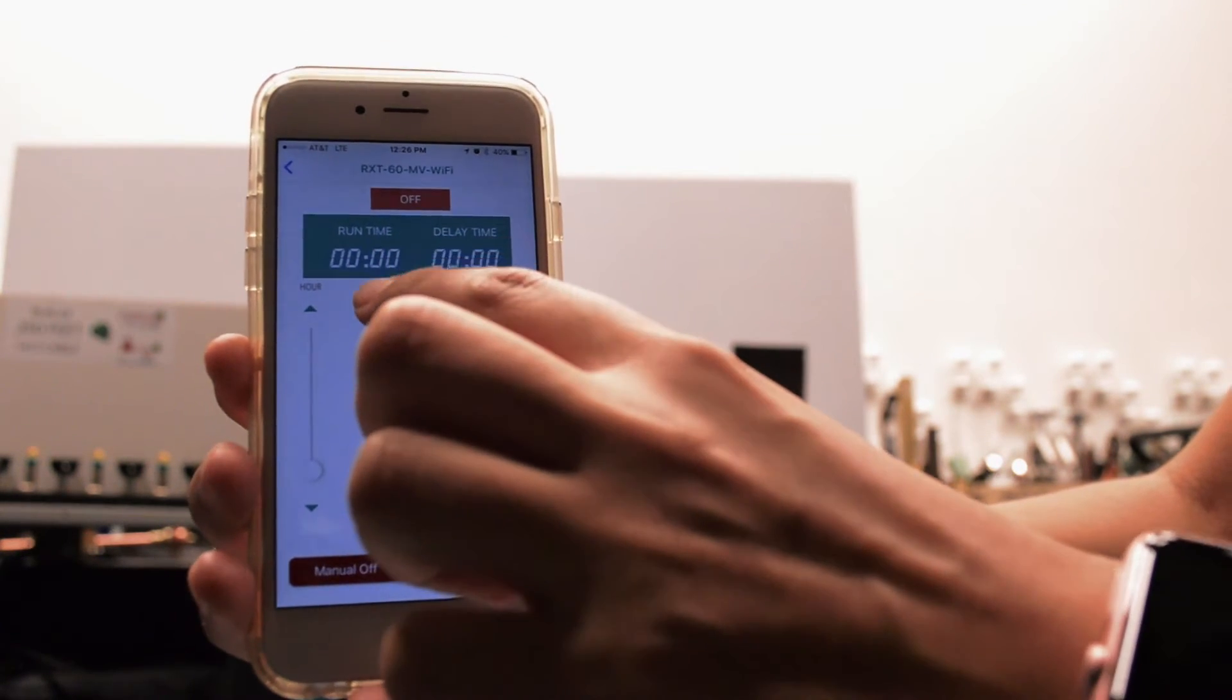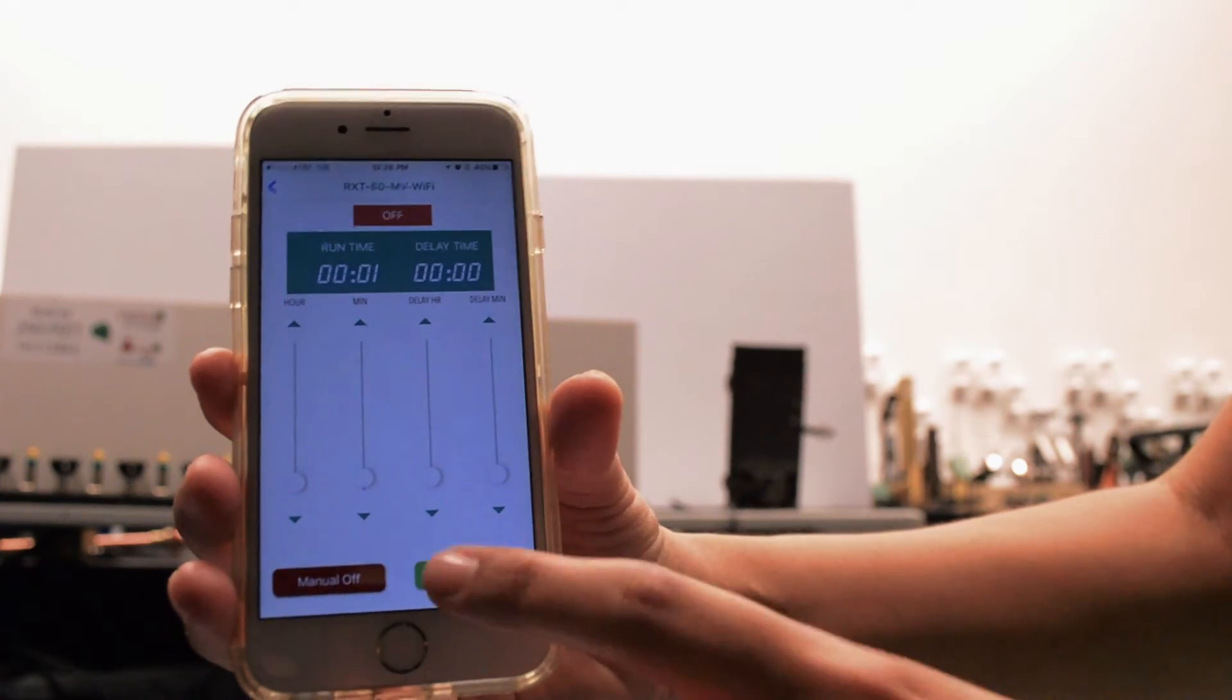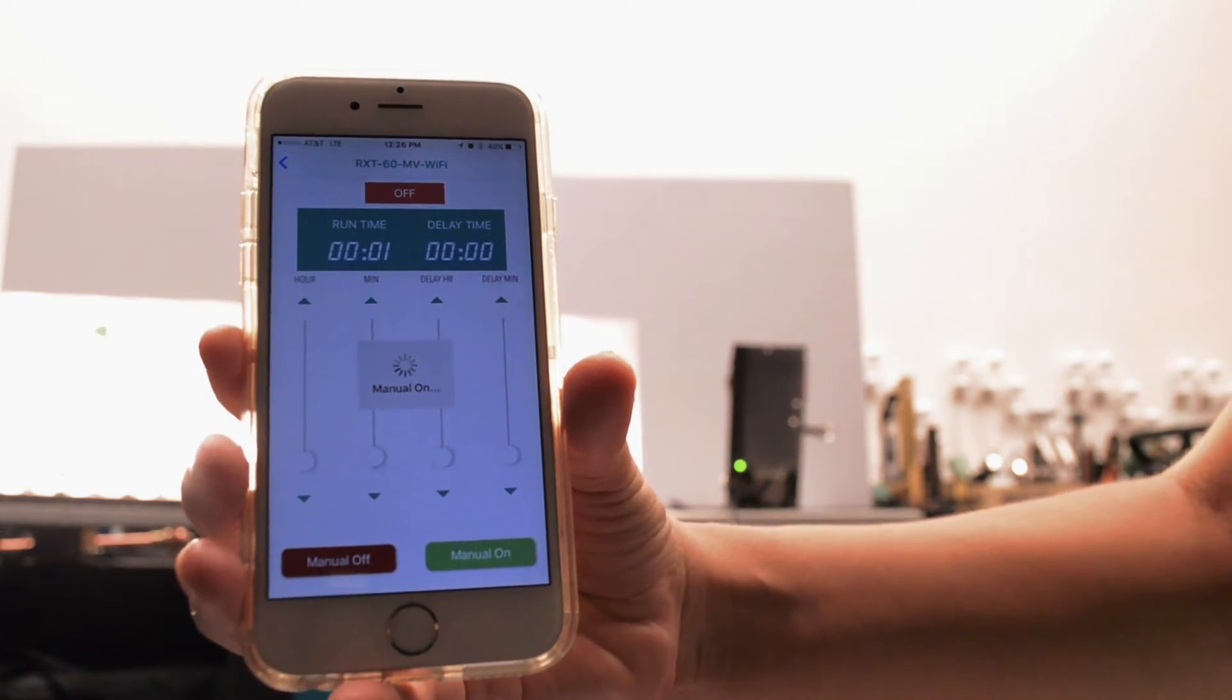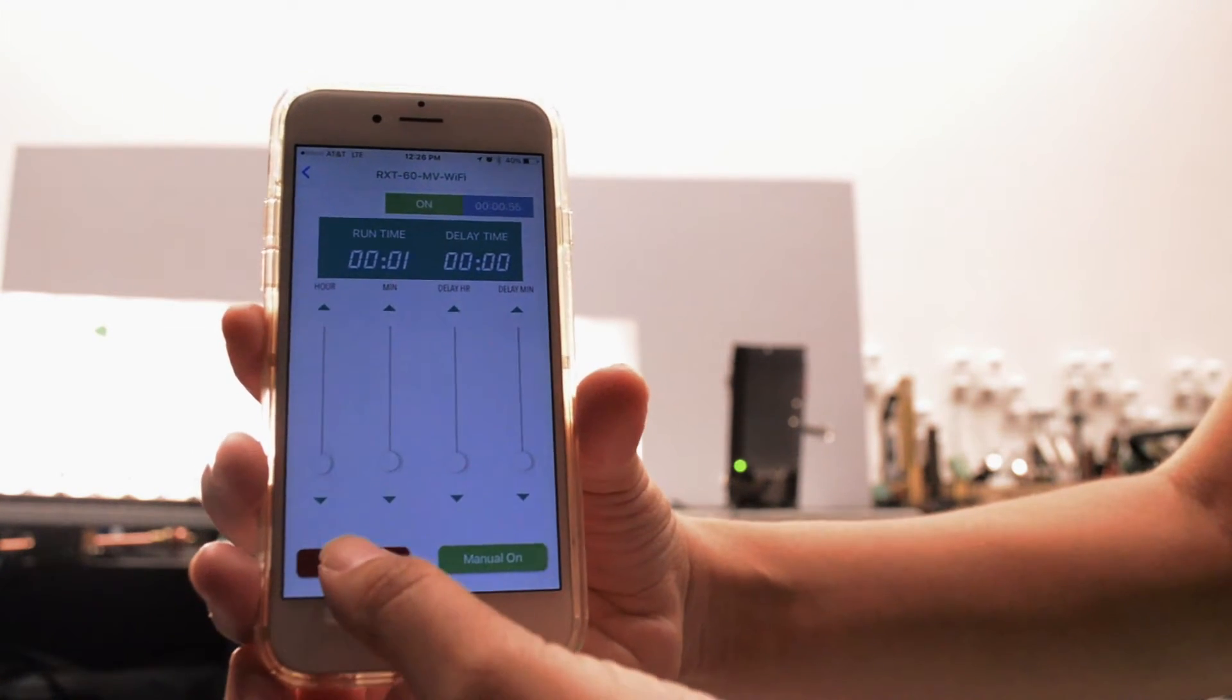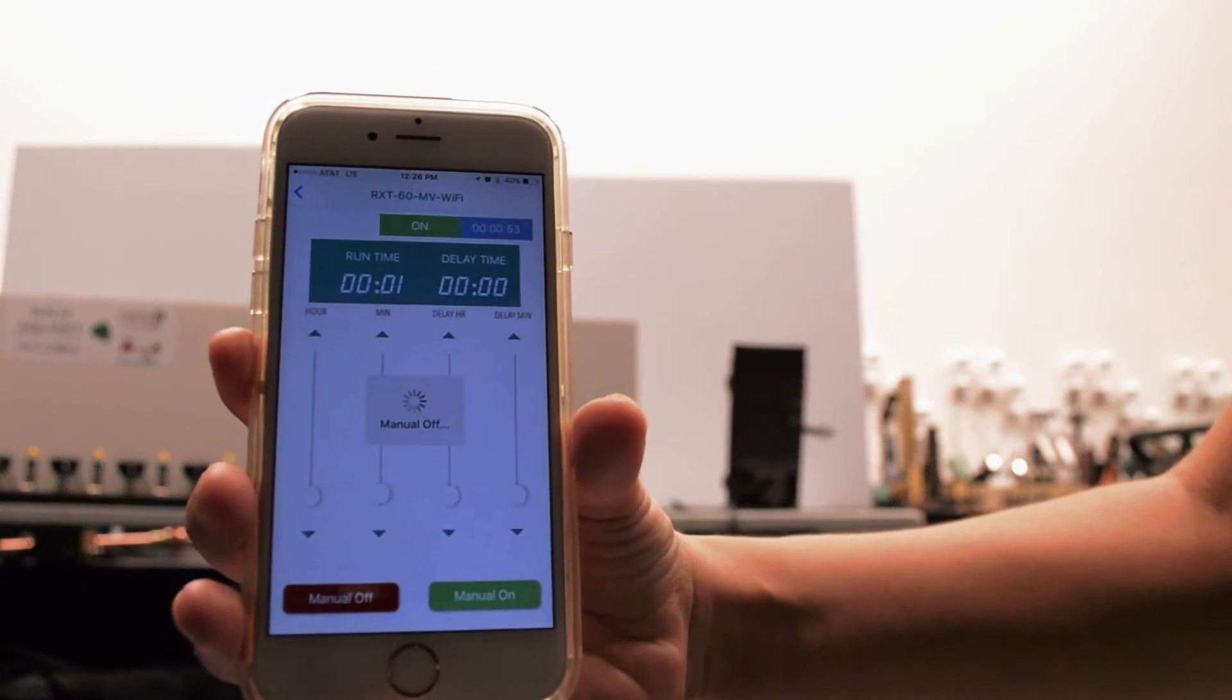So in this case, I'm just going to set it up for a minute and press on. My lights are on. And whenever I'm ready to shut them down, I just press off, and you're all set.